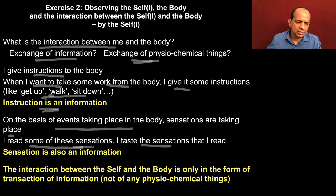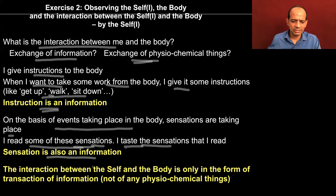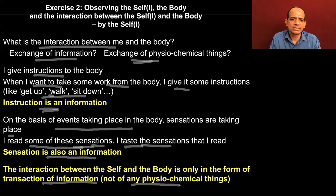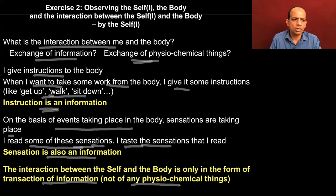You are receiving the sensation, you are tasting the sensation, and the sensation is again an information. So you will see that the interaction between the self and the body is only in the form of information and not of any physiochemical things. Try to observe this. When we are not aware of the presence of the self and we consider ourselves as the body, we consider everything as material. We may assume that whatever is being transacted between me and the body is also material, but when you observe it closely, you find that this is not material — it is only an information.